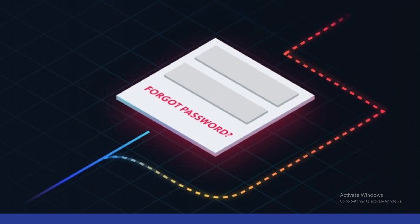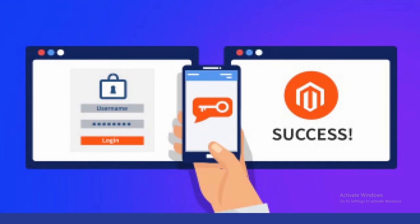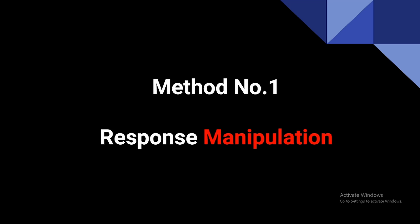In this video, we are going to learn about five different ways or approaches to hunt for authentication vulnerabilities out in the wild. Let's look at the different methods. Method number one: response manipulation.